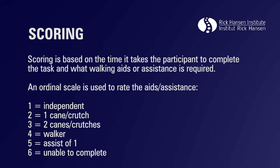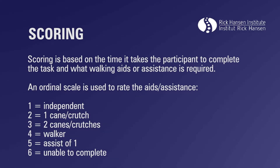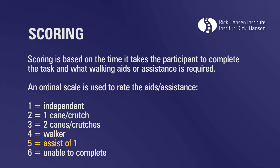Scoring is based on the time it takes the participant to complete the task and what walking aids or assistance is required. An ordinal scale is used to rate the aids or assistance: 1 if the participant completes the task independently; 2 if the participant uses one cane or one crutch; 3 if the participant uses two canes or two crutches; 4 if a walker is used; 5 if the assistance of one person is required, whether minimal, moderate, or maximal; and 6 if the participant is unable to complete the task.